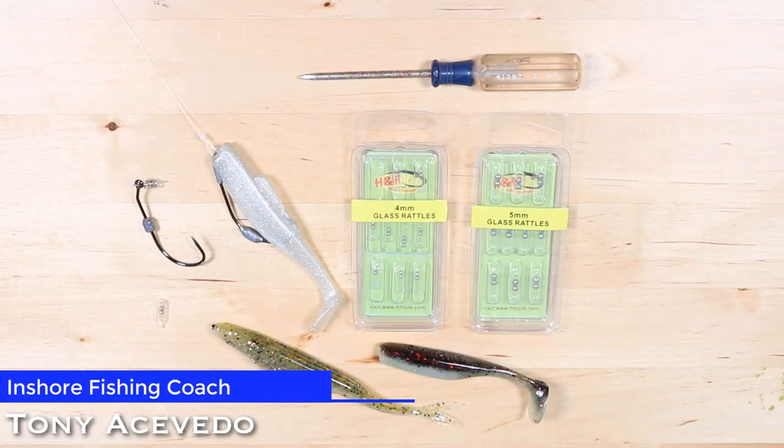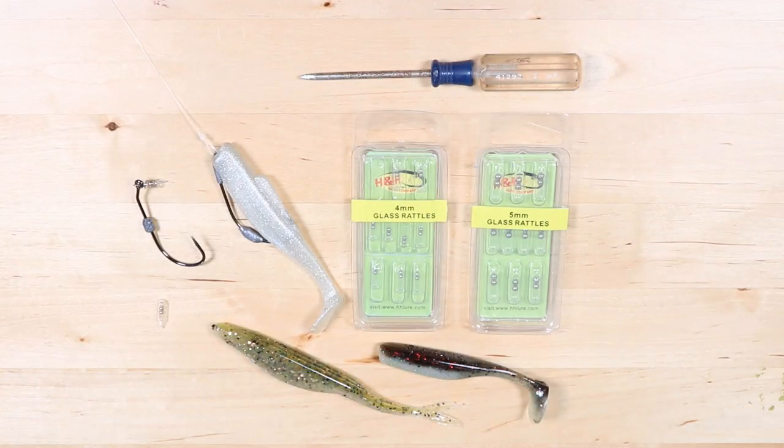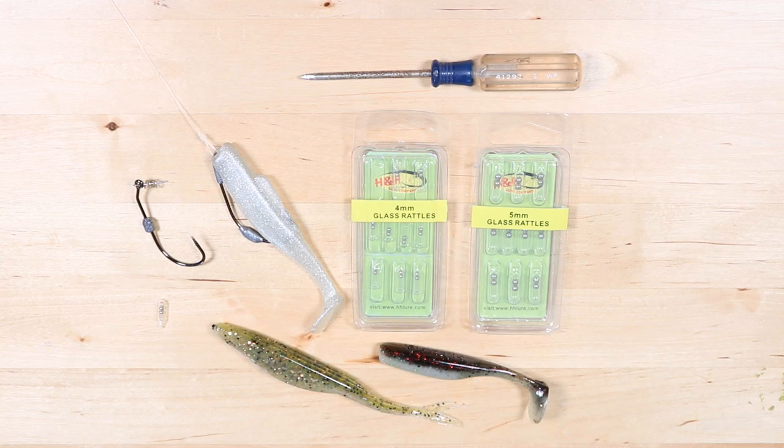Hey, this is Tony with Salt Strong. In this video we're going to be talking about adding rattles to your soft plastics. This can be very effective, especially in murky water, dark water, or even fishing at night, because fish are relying heavily on sound and vibration to track down their food in low-light conditions.